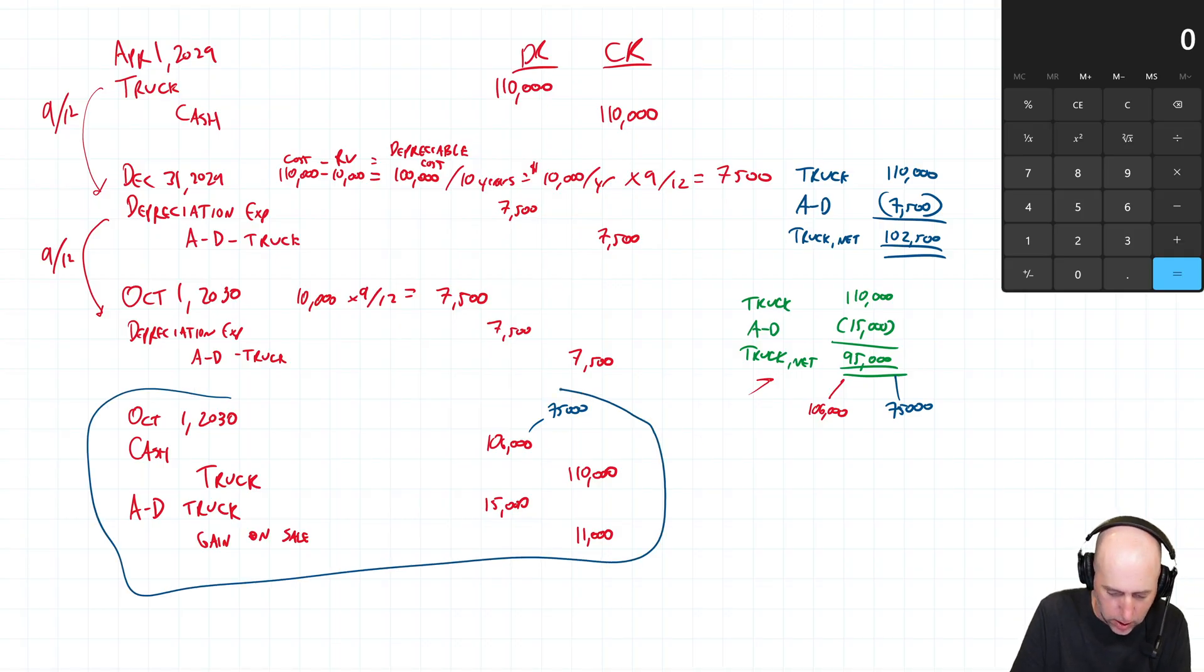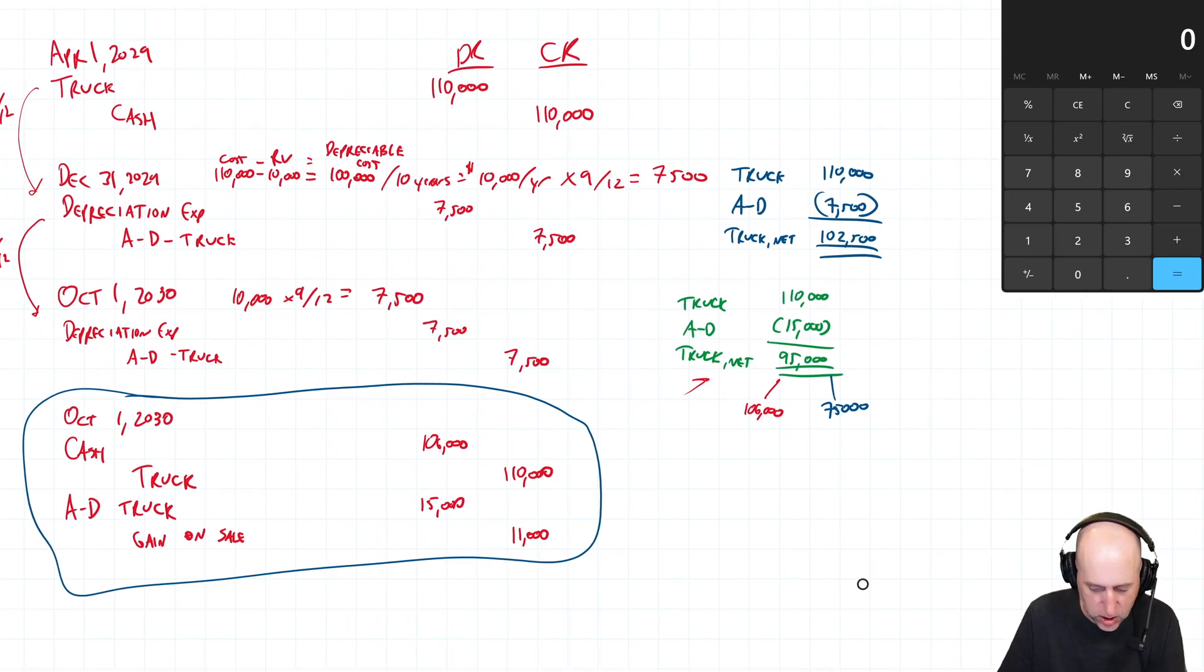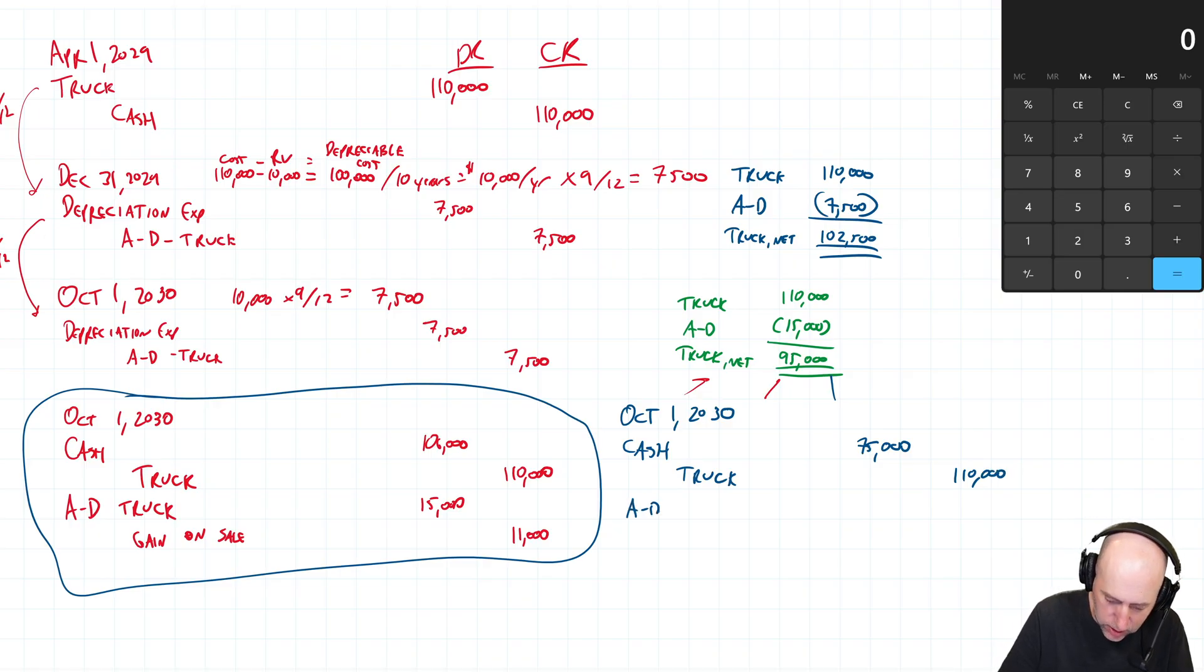October 1st, 2030. Debit Cash and we only got paid $75,000. We get rid of our Accumulated Depreciation on the Truck which was $15,000 in total. We do the same thing we did before. We total it up. I got $90,000 in debits, I got $110,000 in credits. My debits don't equal my credits, I'm off by $20,000.